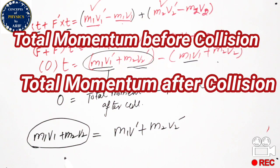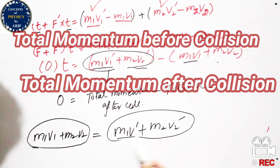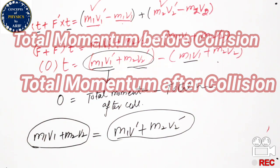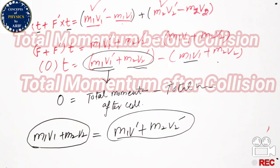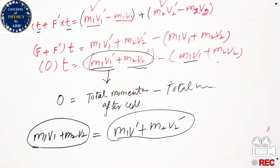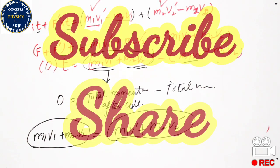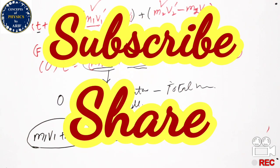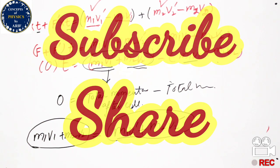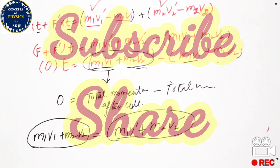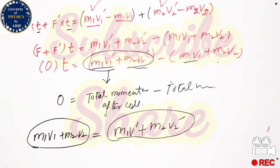This shows that the total momentum before collision of the two balls is equal to the total momentum after collision. This is the proof of the law of conservation of momentum, and it can be applied anywhere — meaning the total change in momentum is zero. If you like our video, please subscribe to our channel, and in the next video we will discuss more about momentum. Thank you so much, bye bye.